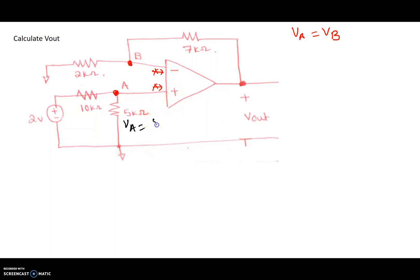So VA is basically 5 kilo ohms divided by 5 plus 10, which is 15 kilo ohms, times 2 volts. So that gives us 10 over 15, in other words, 2 thirds of a volt.